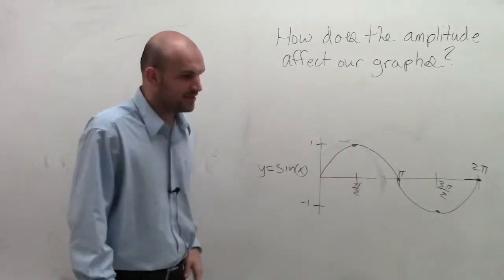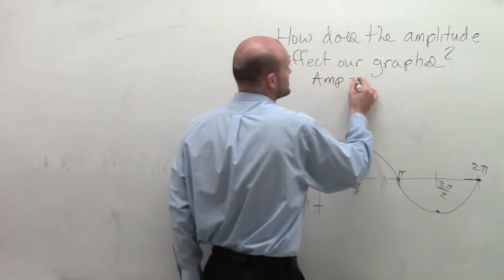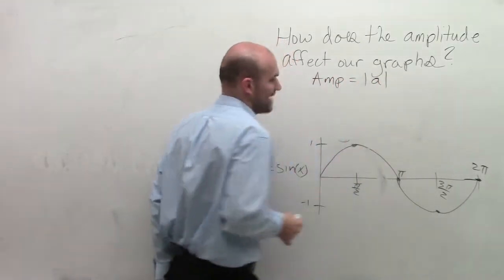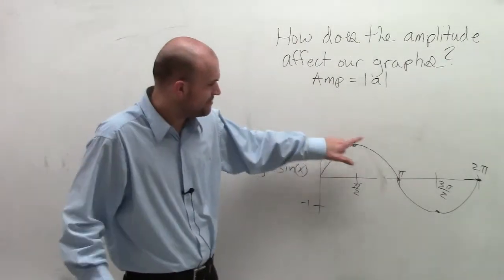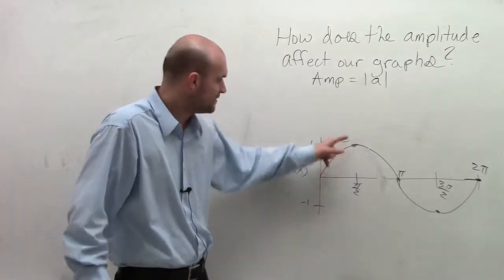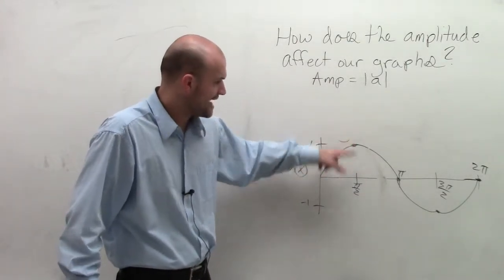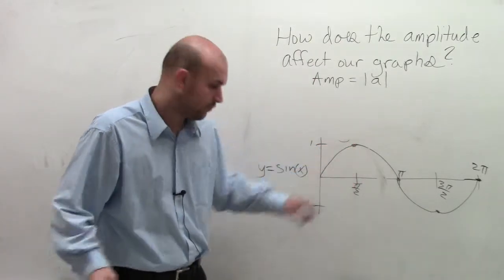So remember, when talking about amplitude, the amplitude is going to be the absolute value of a, where it's the half distance between the maximum and the minimum point of a graph. So in this graph, the amplitude, the half distance, is going to produce a distance of 1.